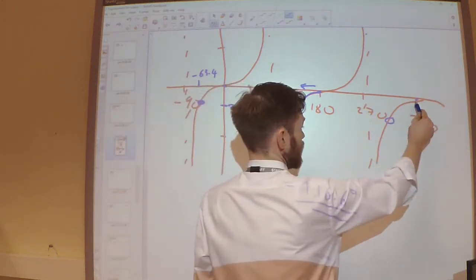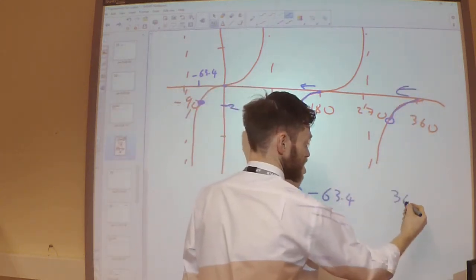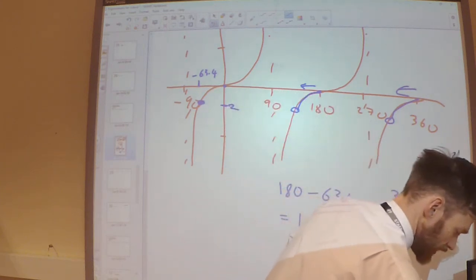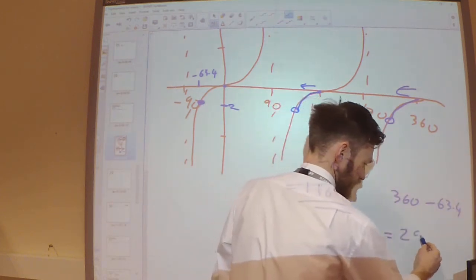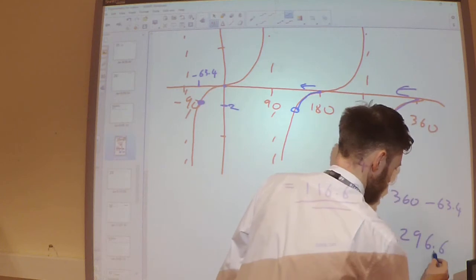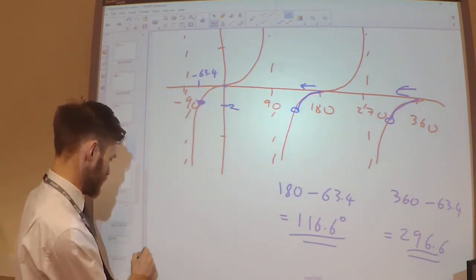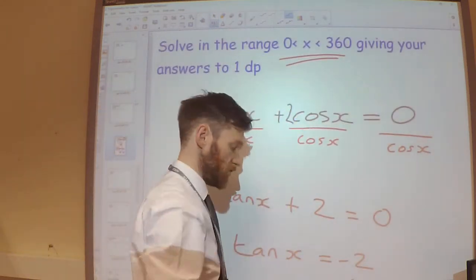And in a similar way over here, I will work out 360 take away 63.4, which is going to give me 296.6. So these are my two solutions to this equation in the range of 0 to 360.